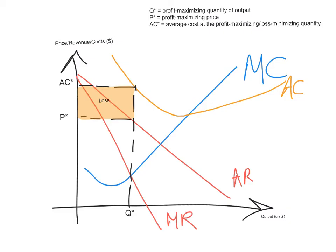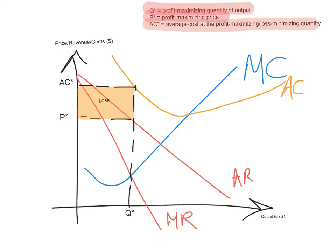What if the firm is making a loss? The diagram will be exactly the same as the previous one, except average cost will be higher than the demand curve. Again, you go to where marginal revenue intersects marginal cost and draw a vertical line down to get the profit maximizing quantity of output. Then continue the vertical line upwards until you intersect the demand curve — this gives you P*, the profit maximizing price — and continue until you intersect the average cost curve, giving you AC*, the average cost at the profit maximizing or loss minimizing quantity. The rectangle shaded in orange represents the firm's loss.